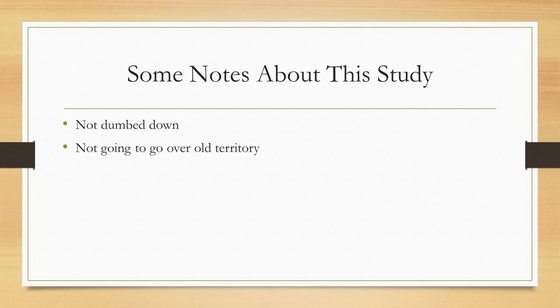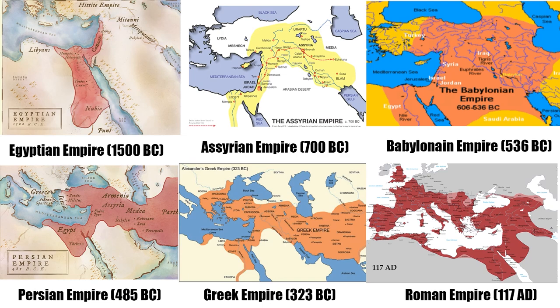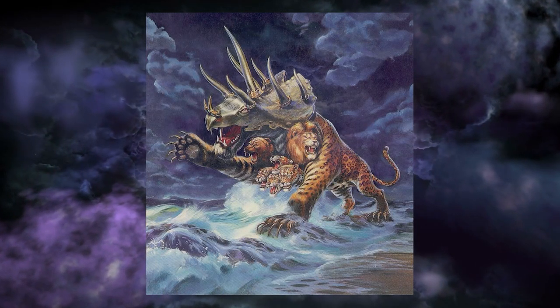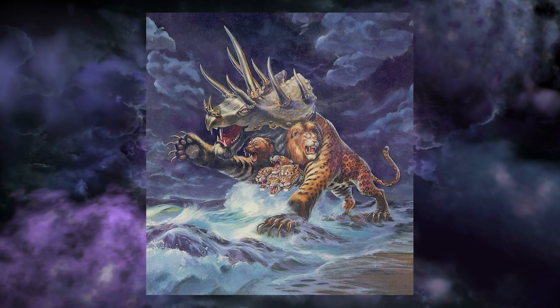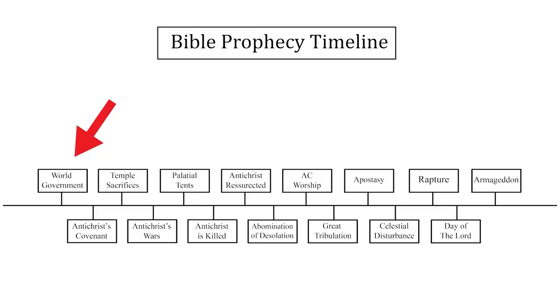Today I'm just going to cover one event on this timeline, which is world government. While I will be discussing certain arguments for the existence of a world government in the end times, as well as certain characteristics it is said to have, one of my main goals today is to justify where I've placed the world government on the Bible prophecy timeline.